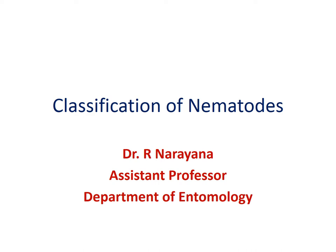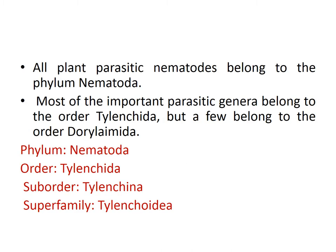Today's class deals with the classification of nematodes, which falls under the taxonomy of nematodes. All plant parasitic nematodes belong to the phylum Nematoda. Most of the important parasitic genera belong to the order Tylenchida, but some belong to order Dorylaimida. The phylum is Nematoda, order is Tylenchida, suborder is Tylenchina, and superfamily is Tylenchoidea.